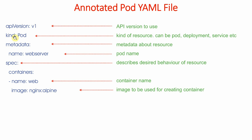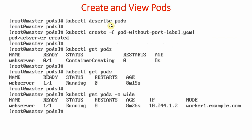Just for explanation purposes we have created an annotated pod YAML file. It describes which API version to use, which kind of object you want to create — whether it is a pod, deployment, or service object. Then there is metadata about the resource; in our case the type of resource is Pod. Then the name of the pod — you can give any other name. Then specification describes the desired behavior of the resource. This is the container name — when we create the pod it will create the container and the name of that container is 'web'. From the image field, we specify the nginx image to be used for creating the container. When we run 'kubectl describe pod' with no pod running, it will not show any output.